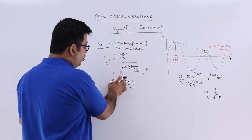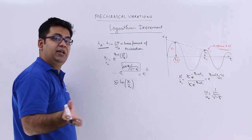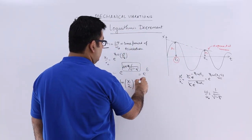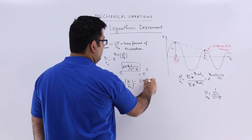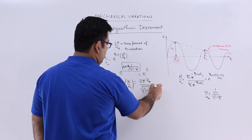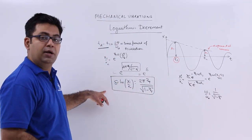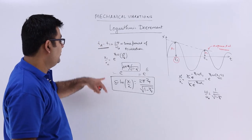This represents two consecutive displacements on the same side of the mean position line, and this equals 2πζ/√(1-ζ²). This is the formula to calculate the logarithmic decrement.